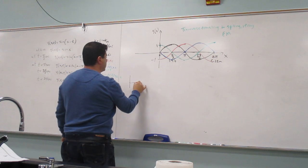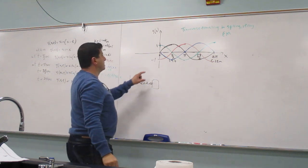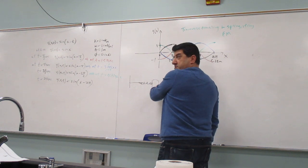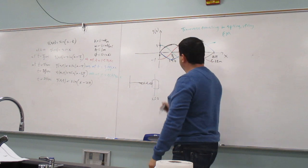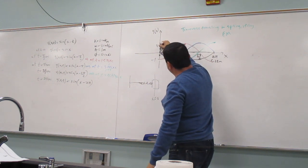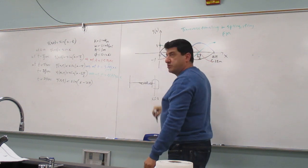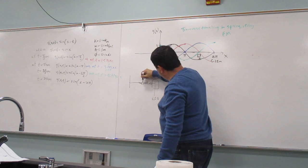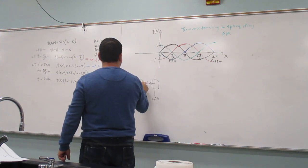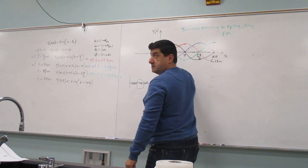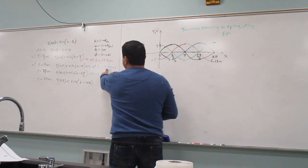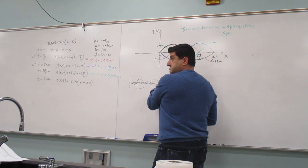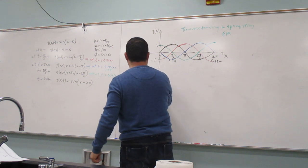Let's map this to the motion of a block. Initially that element is at its equilibrium point — x equals zero. It's moving down, like a block moving to the left. In 1.7 seconds it reaches the most negative amplitude, like a block reaching its most compressed position. Then it goes back, and the next progression is at 3.14 seconds — so it goes and comes back in 3.14 seconds.